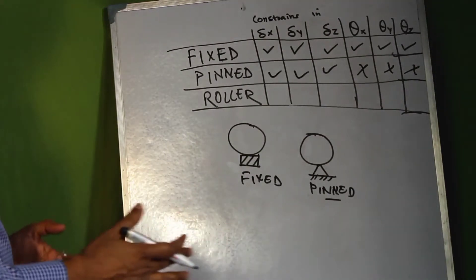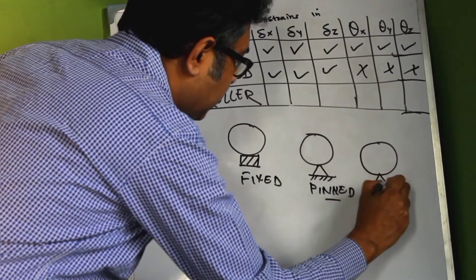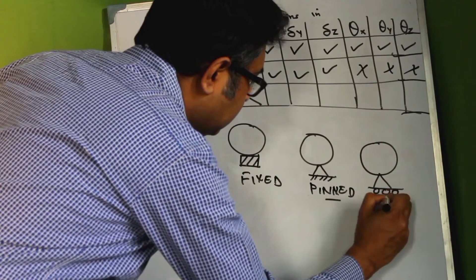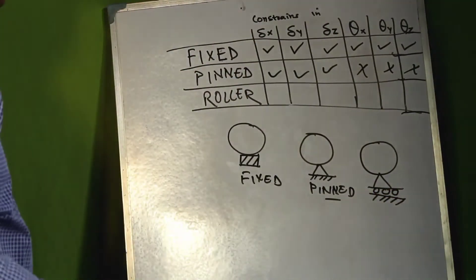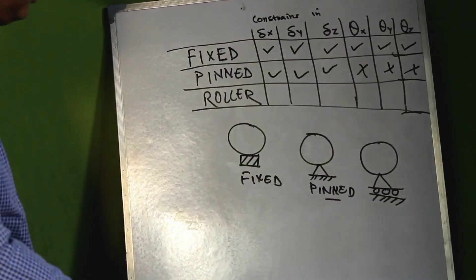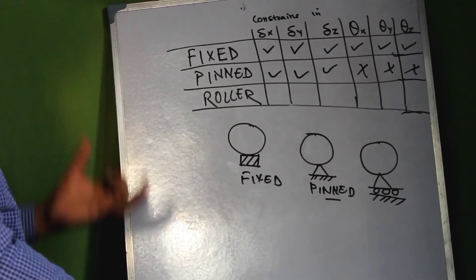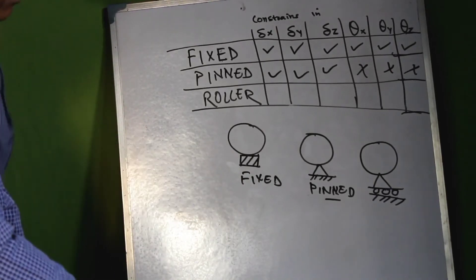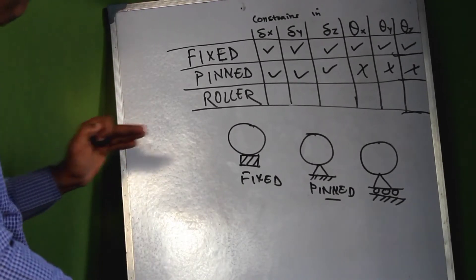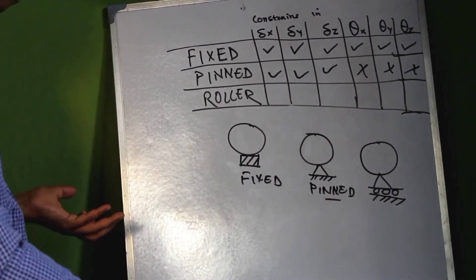The roller support is like a pin support but with wheels beneath it. This is the traditional way of representing a roller support. Since it has wheels beneath, it allows a translational degree of freedom in the direction of the roller, while the rest of the characteristics are the same as the pin support.